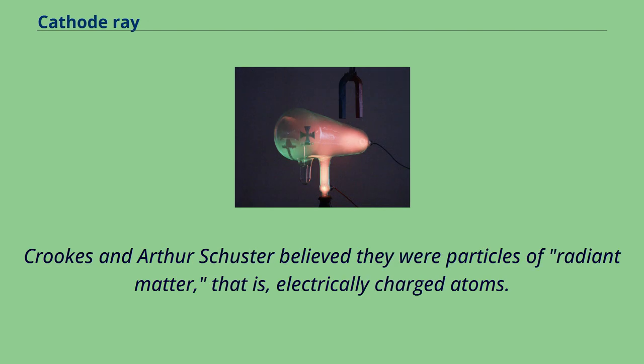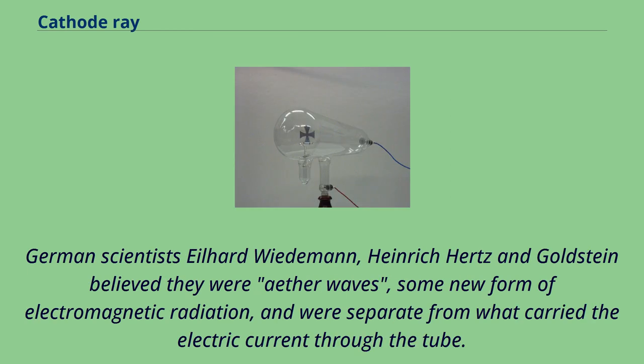Crookes and Arthur Schuster believed they were particles of radiant matter, that is, electrically charged atoms. German scientists Elhard Wiedemann, Heinrich Hertz and Goldstein believed they were ether waves, some new form of electromagnetic radiation, and were separate from what carried the electric current through the tube.